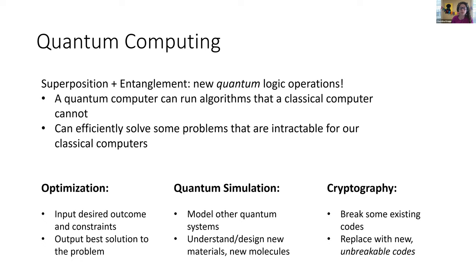This is really the big motivation for why people are excited about quantum computing — the hope that certain problems too hard for a classical computer might have efficient solutions on a quantum computer. Some of the problems people think about fall into three categories: optimization, quantum simulation, and cryptography.